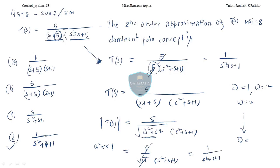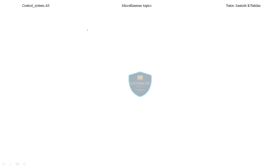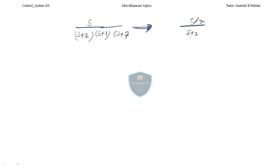So the direct approach is: keep the dominant poles as they are; for the non-dominant poles, substitute their constant value into the numerator so that it cancels. For example, for 5/[(S+2)(S+1)(S+7)], if (S+7) is non-dominant, the approximation is 5·(1/7)/[(S+2)(S+1)] = (5/7)/[(S+2)(S+1)]. That's all for today's two topics. See you in the next lecture — take care and bye.